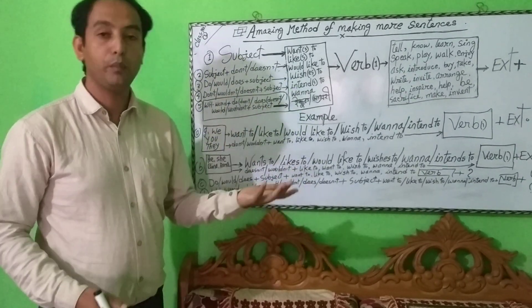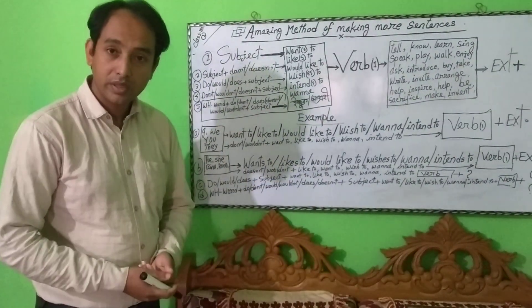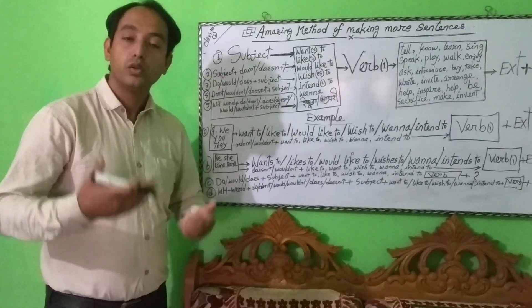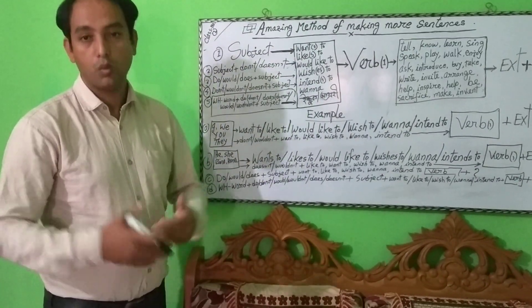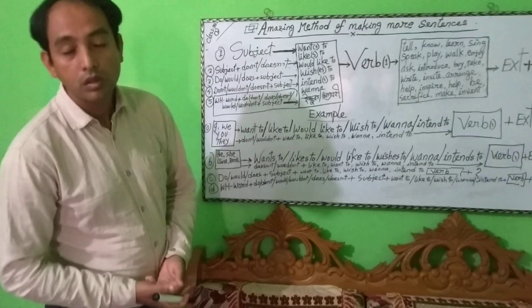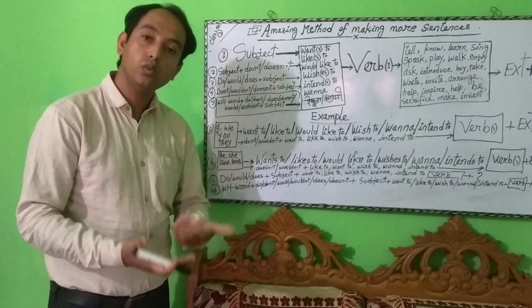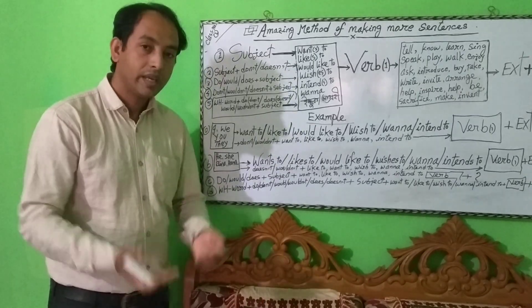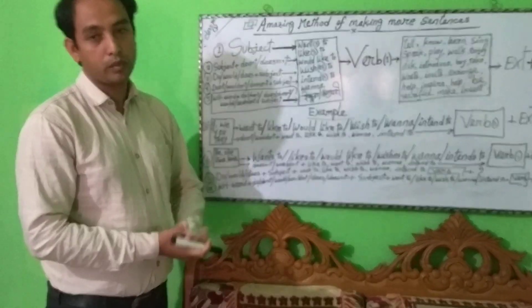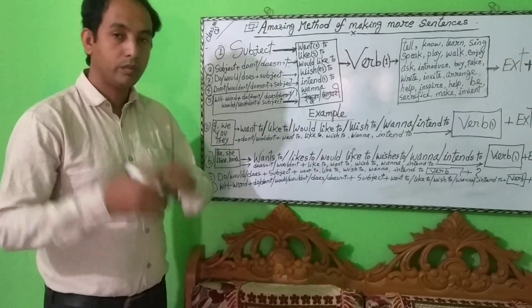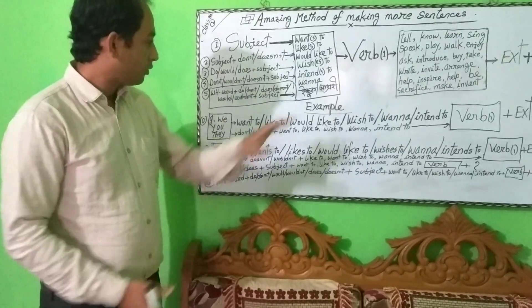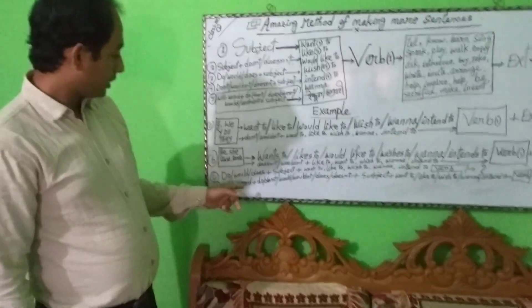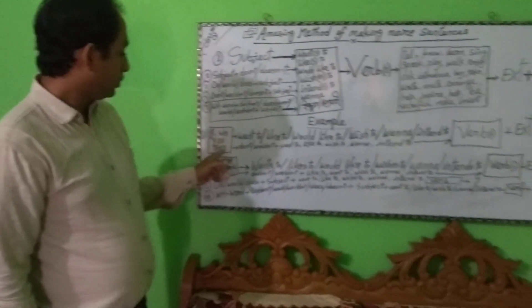From any word you can use from the box — all these have the same meaning. At the very beginning, using a WH word, for 'when': 'When do you want to learn English?' 'When do you like to learn English?' 'When do you wish to learn English?' 'When do you wanna learn English?' 'When do you intend to learn English?' As you wish, you can take any word from the box — the meaning is the same.